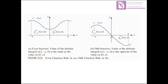For the odd function, the integral from minus a to zero will be positive, while the integral from zero to a will be negative. So if you add a positive value plus the same value but negative, the result will be zero. The area from minus a to zero is positive, and from zero to a is negative, so positive plus negative equals zero.